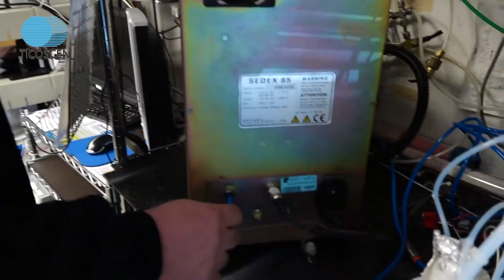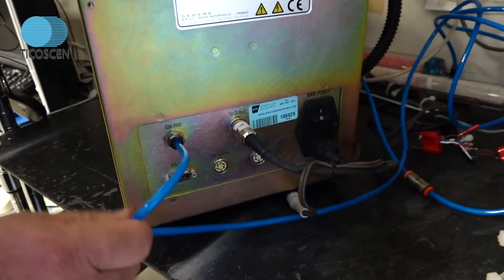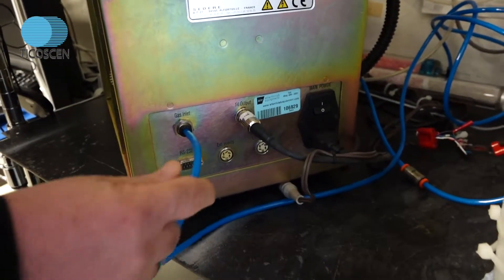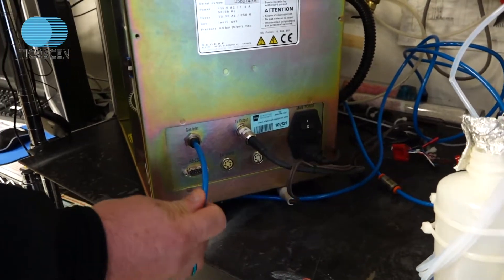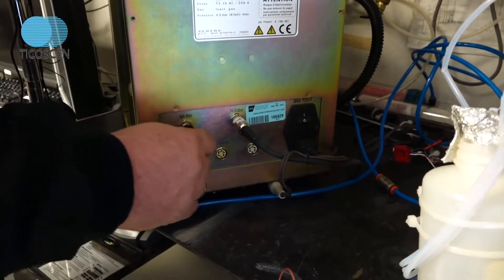There are a few things on the back of the ELSD you need to pay attention to before you start using it. On the back here, we have a nitrogen supply. And it's also critical to know that this blue tube is six millimeters in diameter. It is not a quarter inch. Do not stick a quarter inch tube into this hole. This is six millimeter. It's metric.